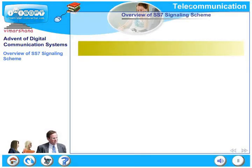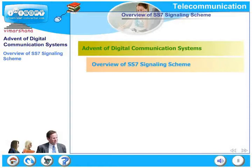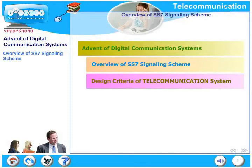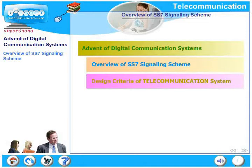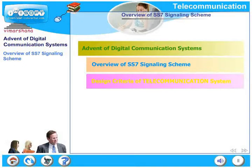In this chapter we will talk about the advent of digital communication systems. First, we will look at an overview of SS7 signaling scheme. Next, we will move on to design criteria of a typical telecommunication system, followed by the evolution of switching systems — including space switching, electronic switching, message switching, circuit switching, and packet switching. We will round it off with a brief overview of ISDN.